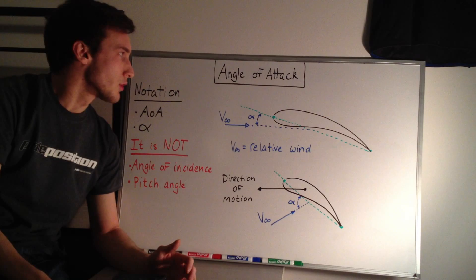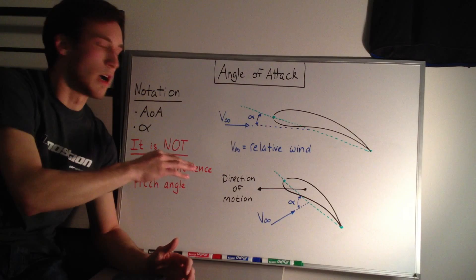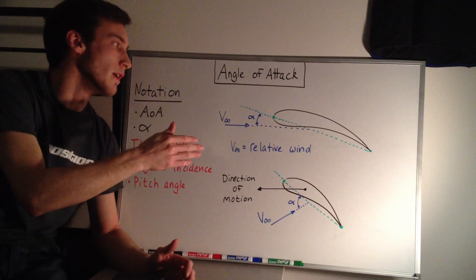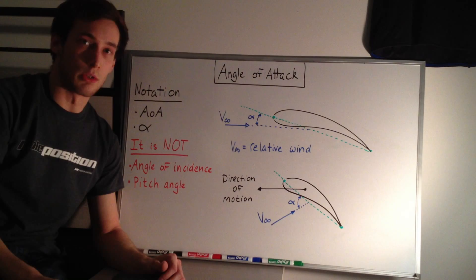So in this case, the angle of attack is defined as the angle between a reference line of the wing, not necessarily a wing, but a reference line, and the relative wind. In this case, we're choosing the reference line as the cord of the wing, and that's usually what's chosen.